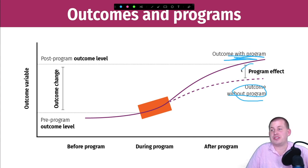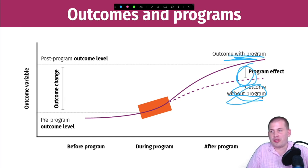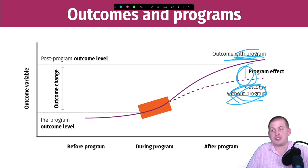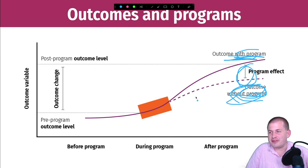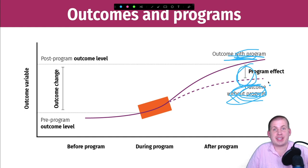This outcome without the program - the counterfactual - often doesn't exist unless you have a randomized controlled trial where some people are in the program and some aren't. That would get at the program effect, but often you don't have a control group to compare with. Instead you kind of have to invent what you think the outcome would be in the absence of the program. That's really hard, and that's the focus of basically the rest of this class - how you can find this program effect.